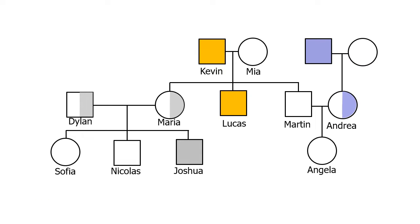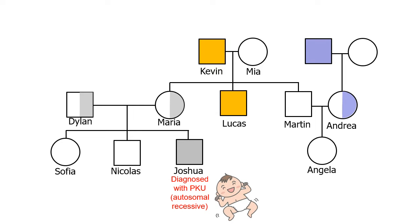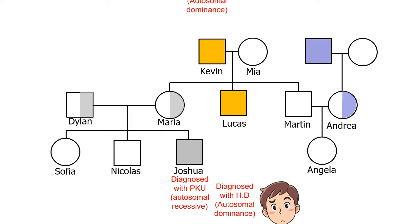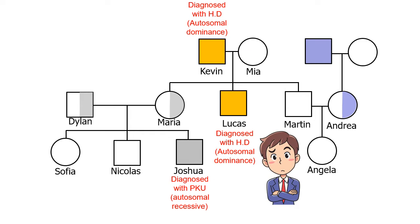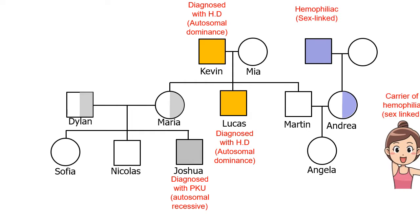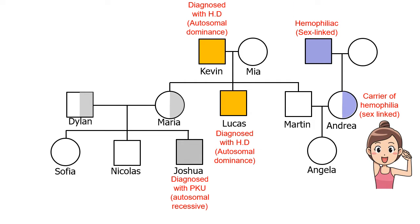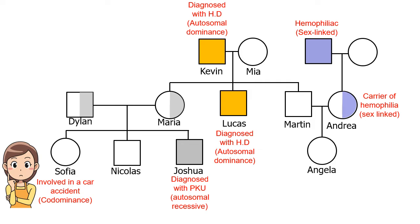Here's our cartoonish family we've been working with for the past several videos. Joshua was diagnosed with PKU — autosomal recessive. Then we met Lucas, diagnosed with Huntington's disease — autosomal dominant. Then we met Andrea; she's a carrier of hemophilia, which is sex-linked. And then Sophia was in a car accident and we used that to understand co-dominance with her blood type.